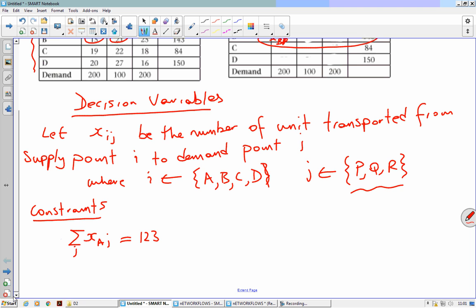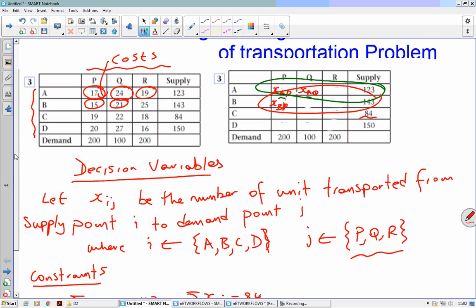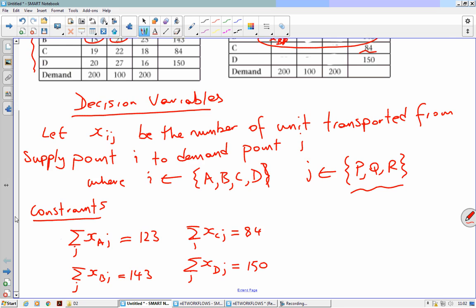So it's xBj. It is, j equals to, and the number was 143. And then we've got sigma xCj equals to 84. Do write the j in there. And then sigma xDj equals to 150. Is that all our constraints so far?